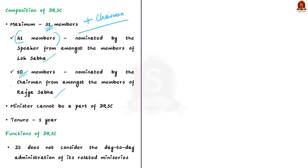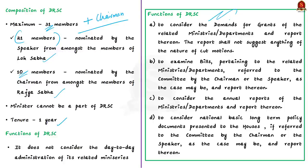DRSCs are constituted on an annual basis for a period of one year. They carry out several important functions but do not consider the day-to-day administration of their related ministries. One of their most important functions is examining bills which are referred to them by the presiding officer of Lok Sabha or Rajya Sabha.